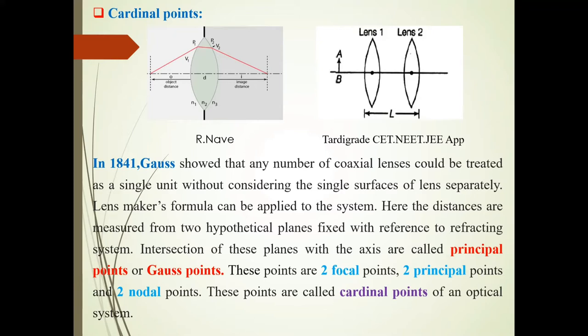If we use a single lens, there are defects in images, there are aberrations. So we use combination of lenses. Coaxial lens system is used in such optical instruments.